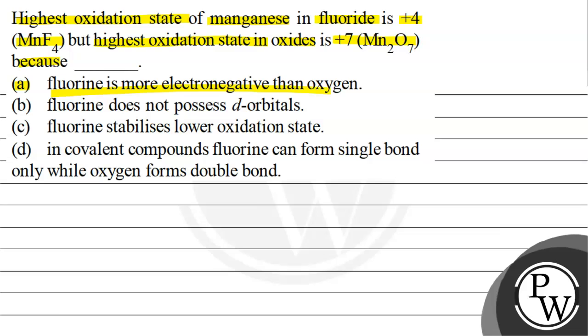A. Fluorine is more electronegative than oxygen. B. Fluorine does not possess d-orbitals. C. Fluorine stabilizes lower oxidation state. And D. In covalent compounds, fluorine can form single bond only while oxygen can form double bond.